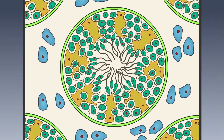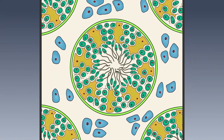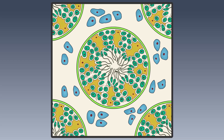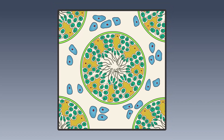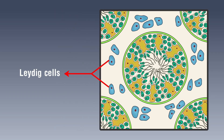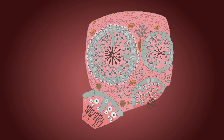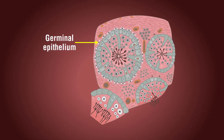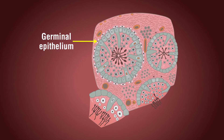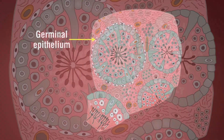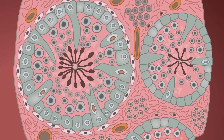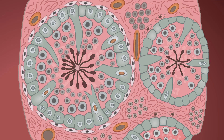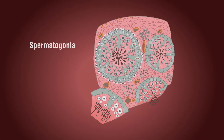The interstitium is the region outside the seminiferous tubules, also called interstitial spaces, which contain small blood vessels and interstitial cells or Leydig cells. Each seminiferous tubule is lined by a special kind of epithelium called germinal epithelium, which is made of primordial germ cells. The seminiferous tubule is also lined on its inside by two types of cells: spermatogonia and Sertoli cells.